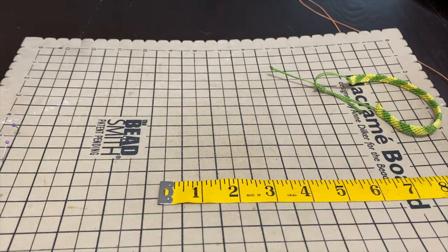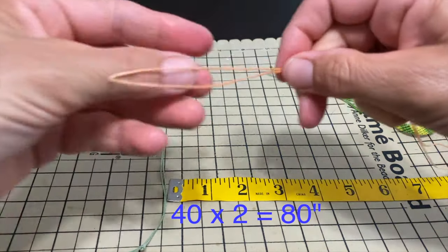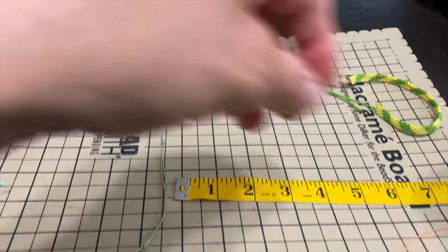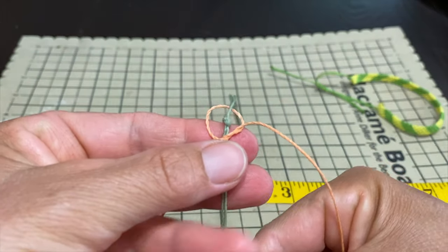Now we're going to take the other long string, the one that is 40 inches and is doubled, so 80 inches total, and we will tie it just below the knot.